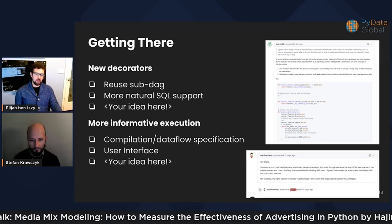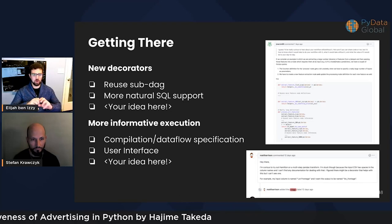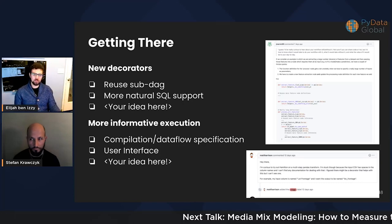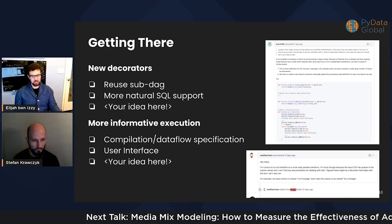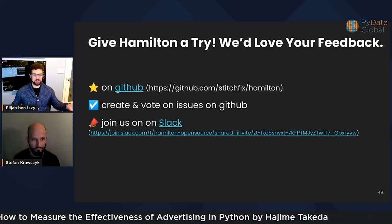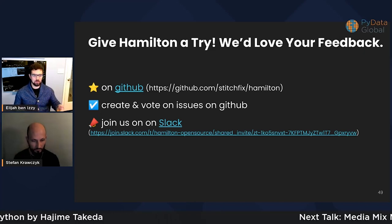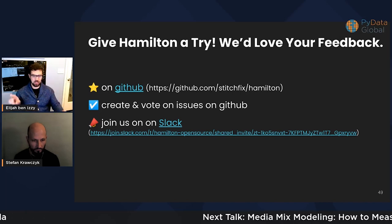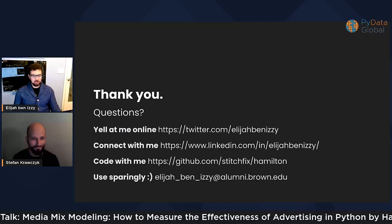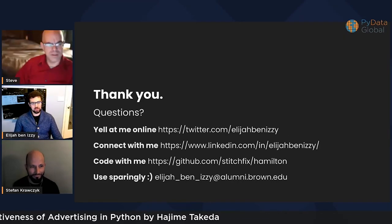We're also looking at more informative execution — how we can compile down and specify this data flow in a way that maintains decoupling from functions and materialization, and building more interactive user interfaces. If you have any ideas, we're all yours. Give Hamilton a try — we'd love your feedback. Please give it a star on GitHub, create and vote on issues, and join us on Slack. The link is in our documentation. You can reach me on Twitter, LinkedIn, GitHub, or via email — use it sparingly. Thanks, everyone, really appreciate your time.